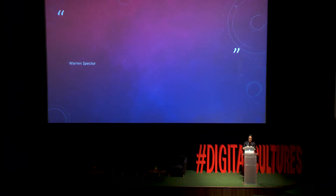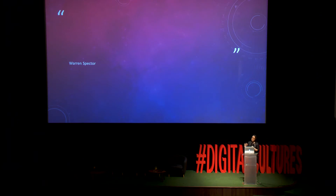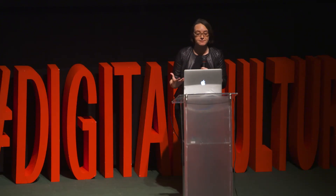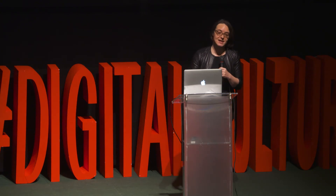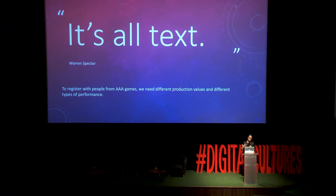The final point: I was giving a talk at an event that Warren Spector was also at — a big name in video games. He was talking about what he wanted to see in games, describing wanting to see that kind of emotional and social responsiveness that we had in Versu. I knew he'd played Versu. I actually called him out and said, 'If this is what you want, why aren't you happy with what Versu's doing?' And he said, 'It's all text. The problem is it's all text.' So to register with people from the AAA game space, we need to build things with different production values and different types of performance.